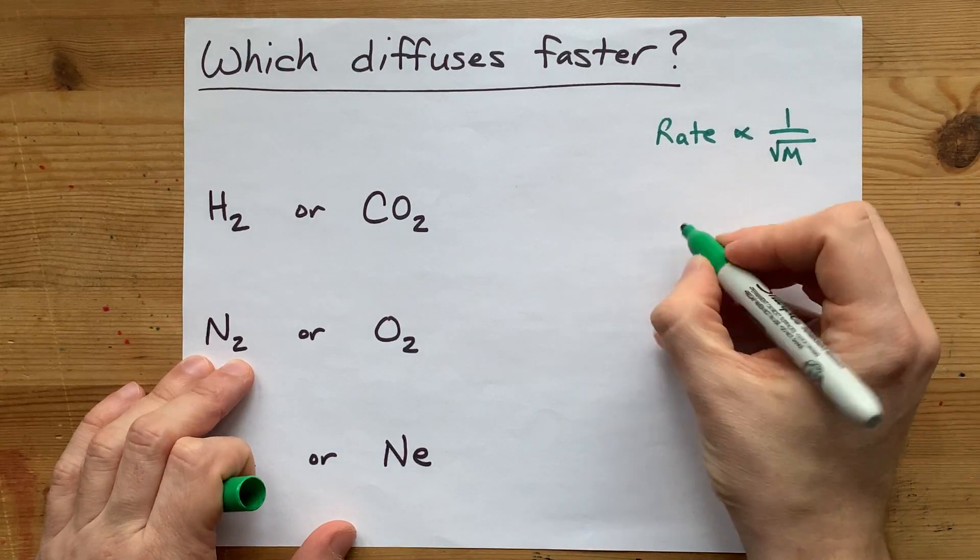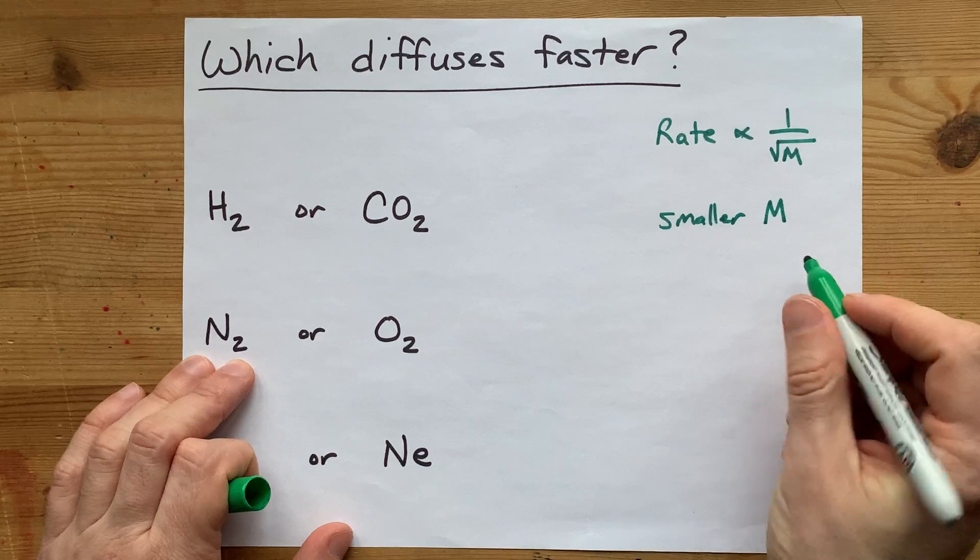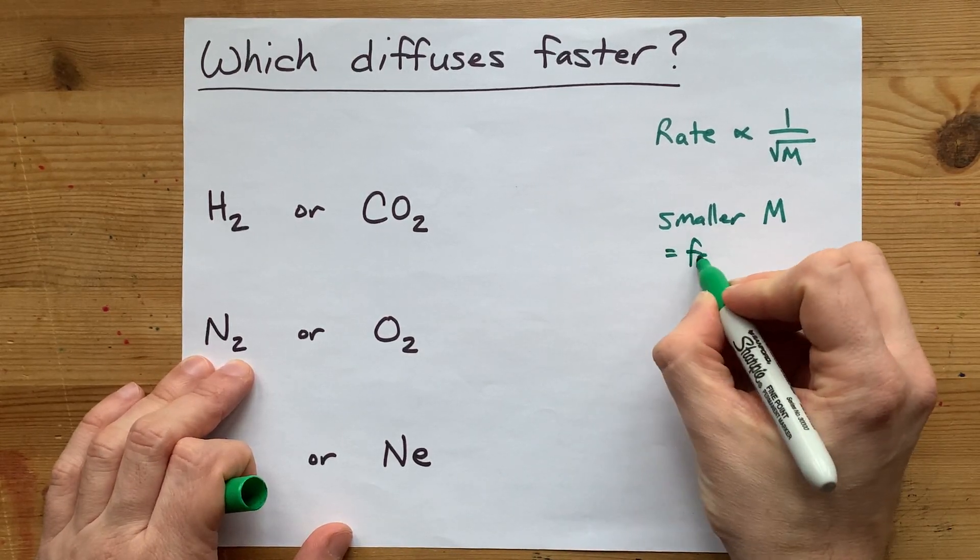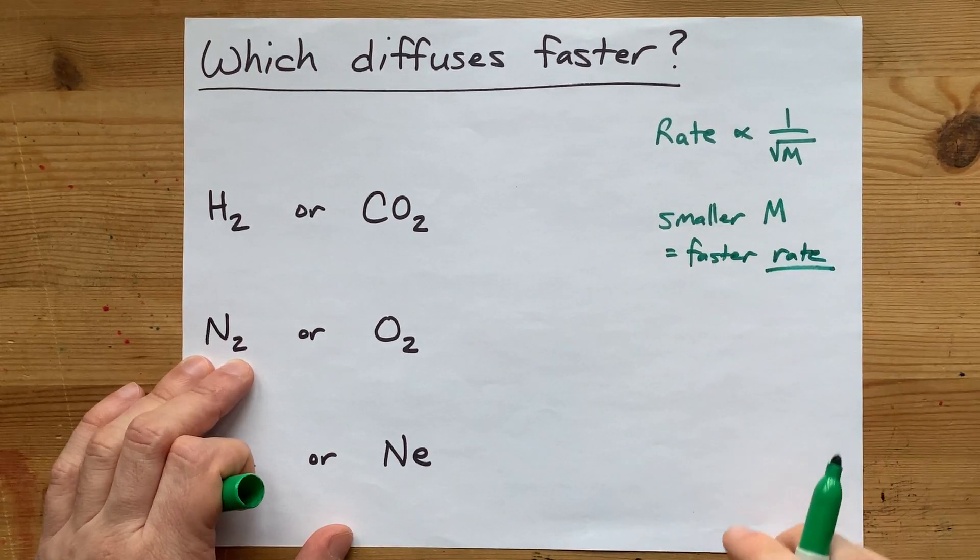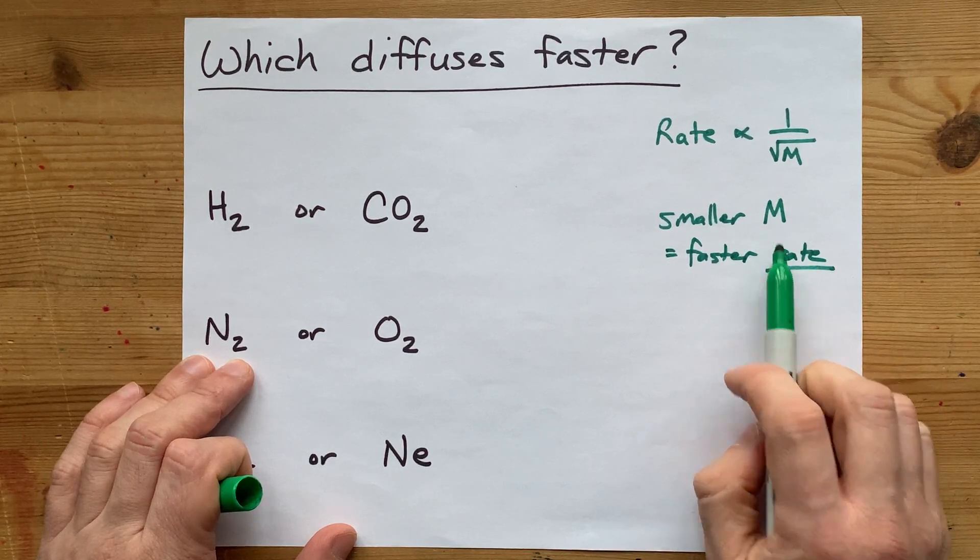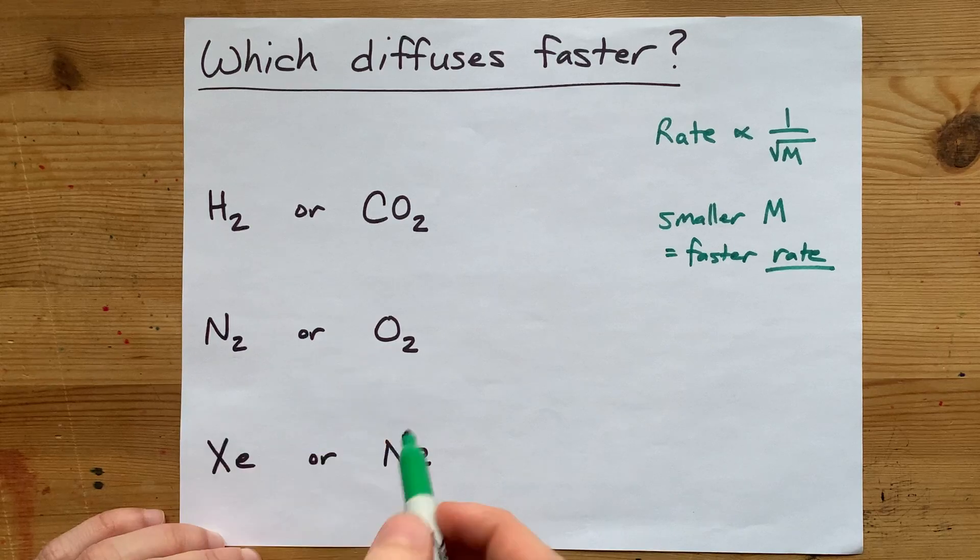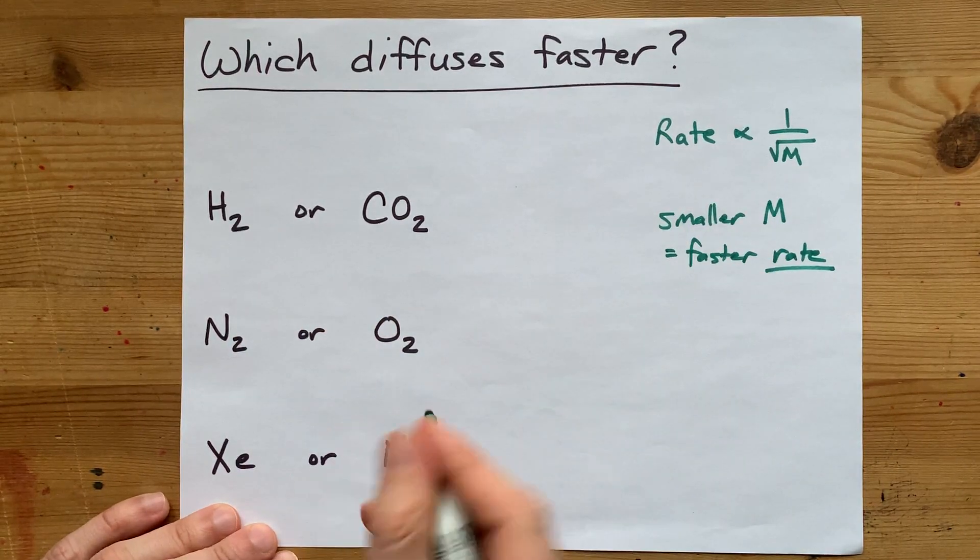What that means is that a smaller molar mass, or capital M, means you're dividing by a smaller number, and so you'll get a faster or larger rate out of it. The smaller the molar mass, the faster the rate. So you just need to figure out which of the two molecules in each pair has the smaller molar mass.